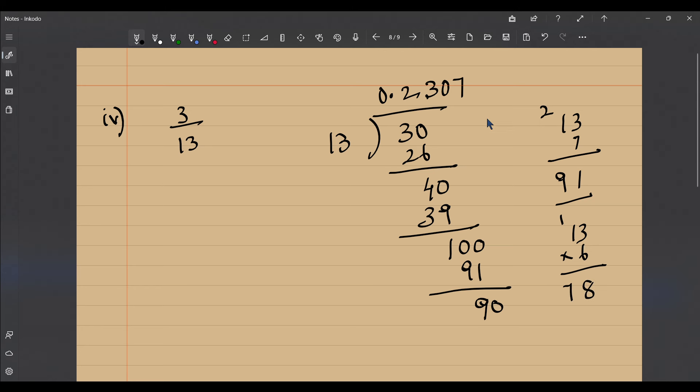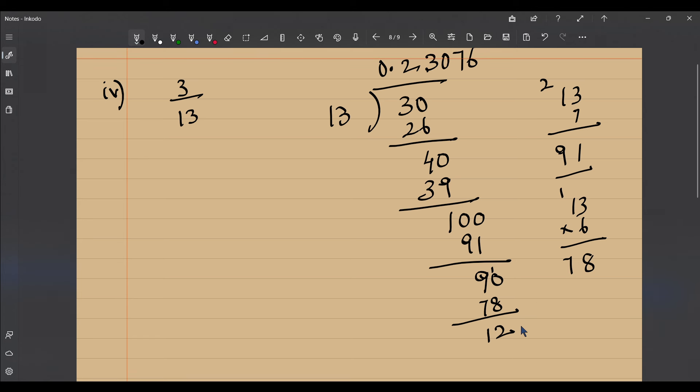6 threes is 18, so you get 6, 7, 8, the remainder is now 10 minus 8, 2, 8 minus 1, 12. I think this is going to go on, so 120. 13 into 10 is 130, so let's try what is 13 multiplied by 9. 9 threes is 27, 117.